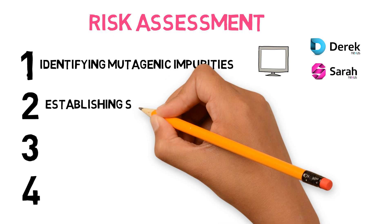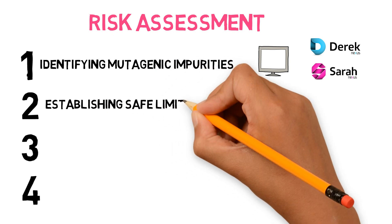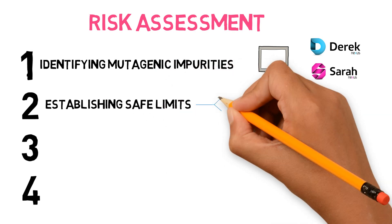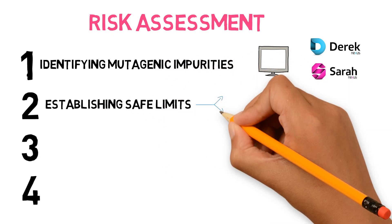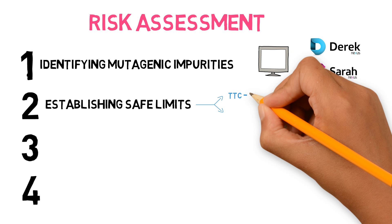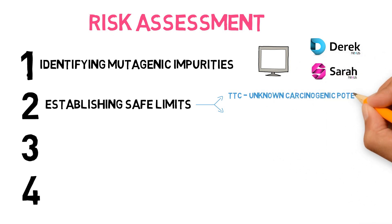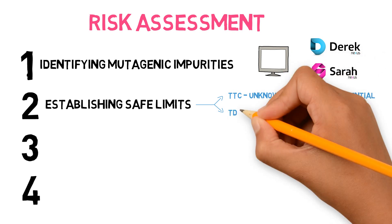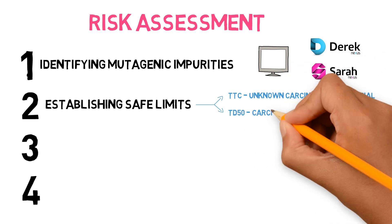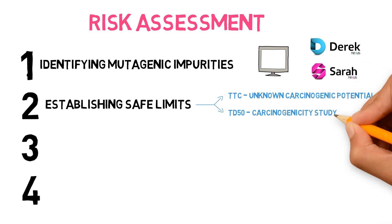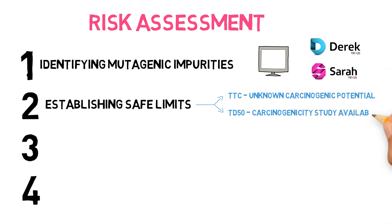The second stage is establishing safe limits. The limit for mutagenic impurities is based on the TTC in case the carcinogenic potential is unknown, or on the TD50 derived from the carcinogenicity study if available.